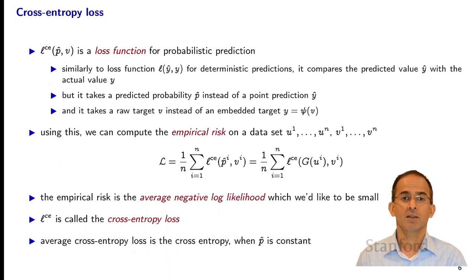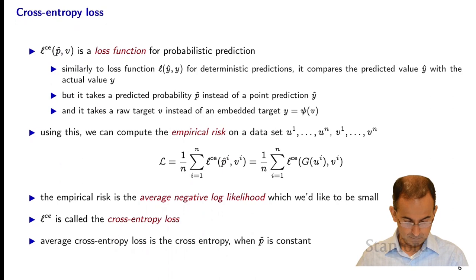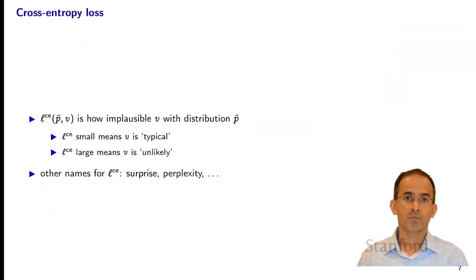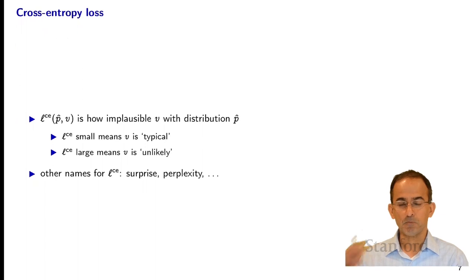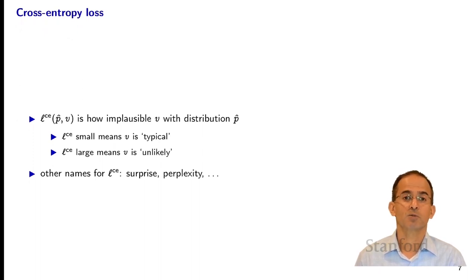When you have a constant predictor — meaning p-hat i doesn't depend on i — then you can work out that this quantity is the cross entropy. So the average cross-entropy loss is the cross entropy when p-hat is constant. When interpreting this, we think about it as a measure of implausibility: the cross-entropy loss of p-hat and v is large when v is implausible under distribution p-hat, and small when v is likely under distribution p-hat. People call this surprise or perplexity.